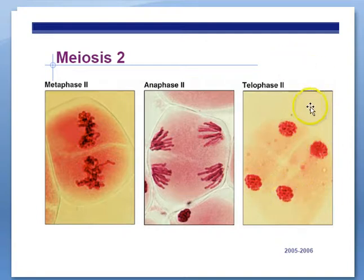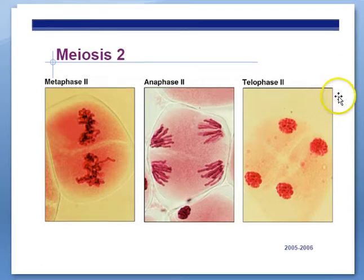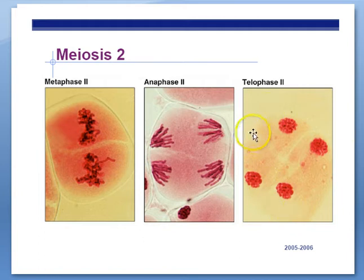In men, each one of these four cells will become a sperm. However, in females, only one becomes an egg — the other three become something called a polar body that gets reabsorbed by the female. Also, men do a lot of meiosis — they produce millions of cells a day, whereas women only produce one egg a month.